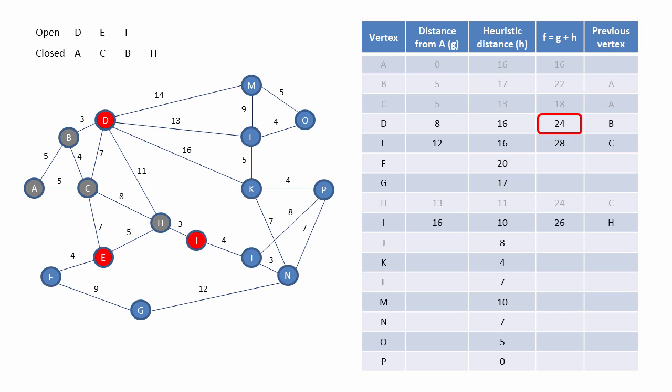D now has the smallest F value, so this becomes the new current vertex. We open M, L and K. We calculate their F values from their G and H values. And we close D. Now I has the lowest F value, so I becomes the new current vertex. There's only one extra vertex to open this time, and that's J. We calculate J's F value and close I.